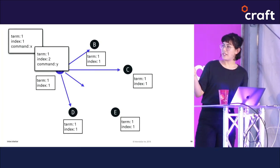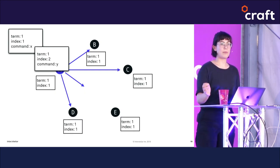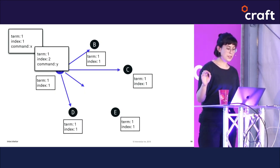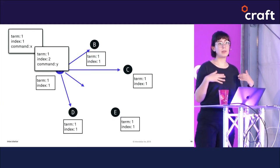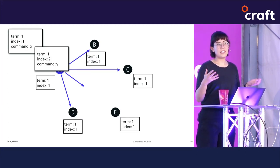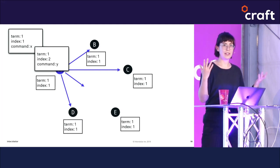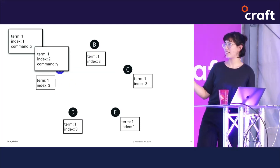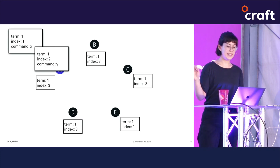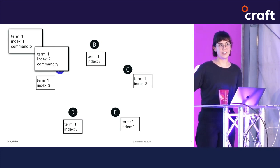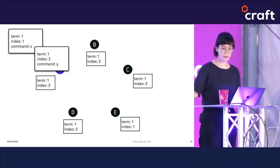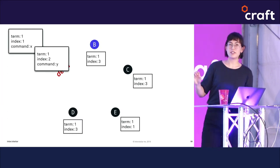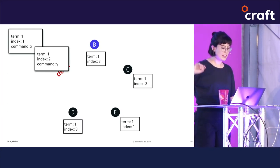Each message also includes the index and term of the previous entry. Nodes B, C, and D receive them and apply them to their log, but node E never receives them — maybe due to a network partition. Now our network has everyone at index 3 except node E, who's stuck in the past. Then imagine node A crashes and node B gets elected leader.